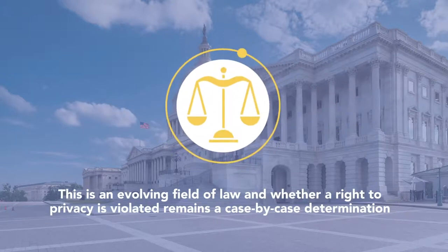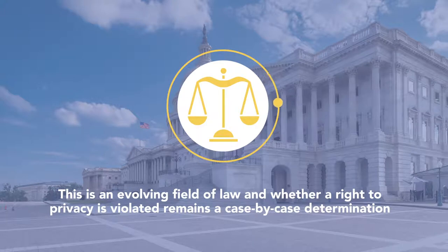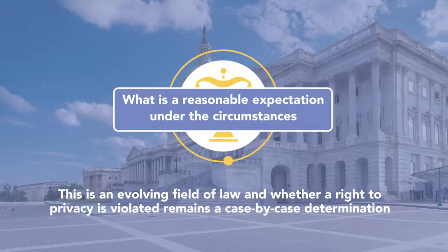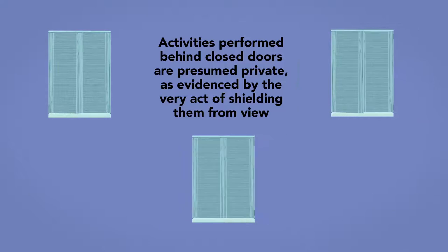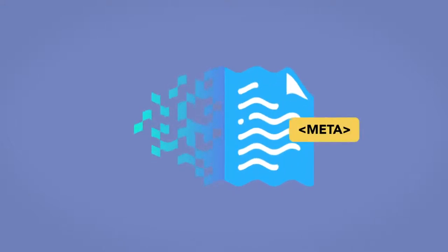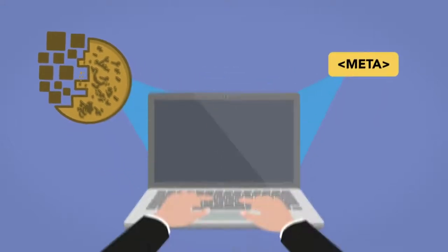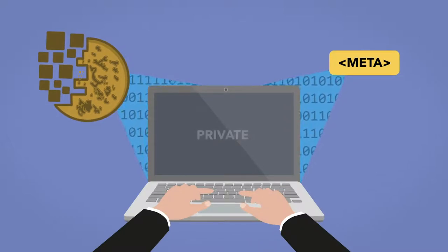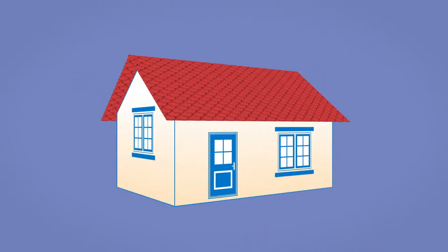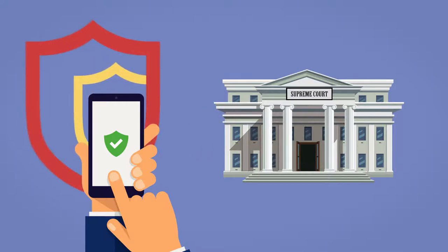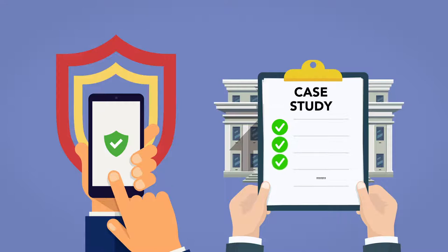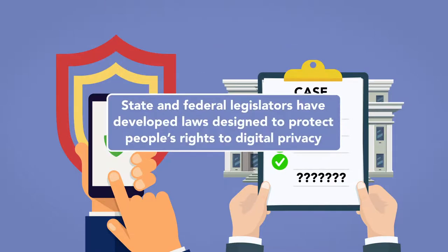Over time, the courts have repeatedly considered which methods of government surveillance raise constitutional privacy concerns. This is an evolving field of law, and whether a right to privacy is violated remains a case-by-case determination, largely dependent on what is a reasonable expectation under the circumstances. In the digital age, applying this concept can be murky — things like metadata and digital cookies often collect data on our online activities even when we are using private computers on personal internet connections in our own homes. As a result, state and federal legislators have developed laws designed to protect people's rights to digital privacy.